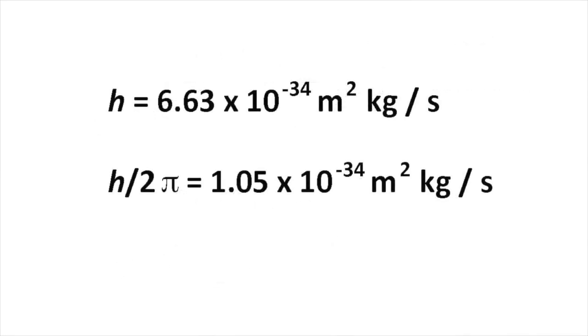This quantity is h divided by 2π, where h is a fundamental constant of nature known as Planck's Constant. It has the incredibly small value of about 10 to the minus 34 meters squared kilogram per second, which explains why the Uncertainty Principle is only noticeable when we look at things on a very, very small scale.